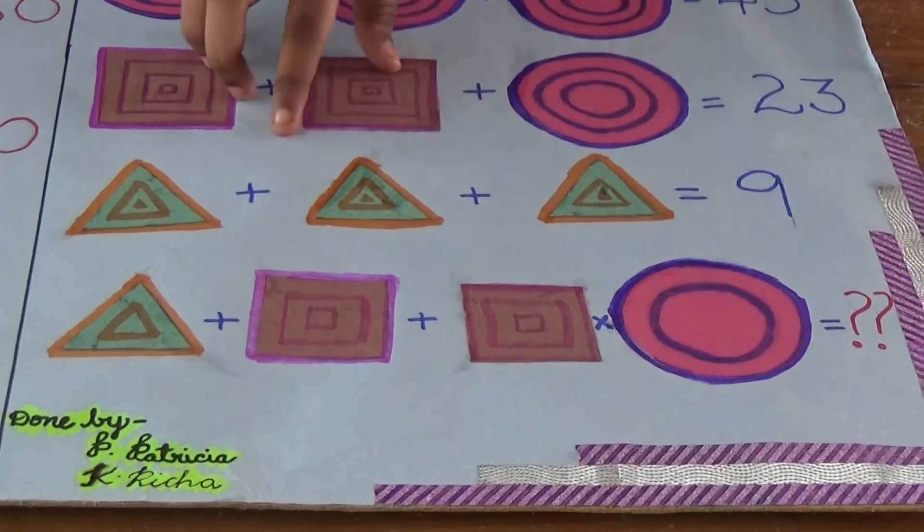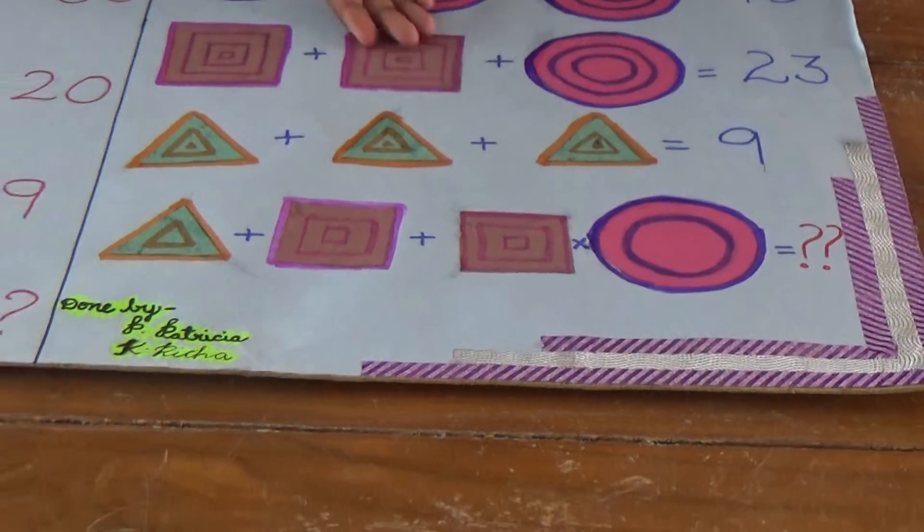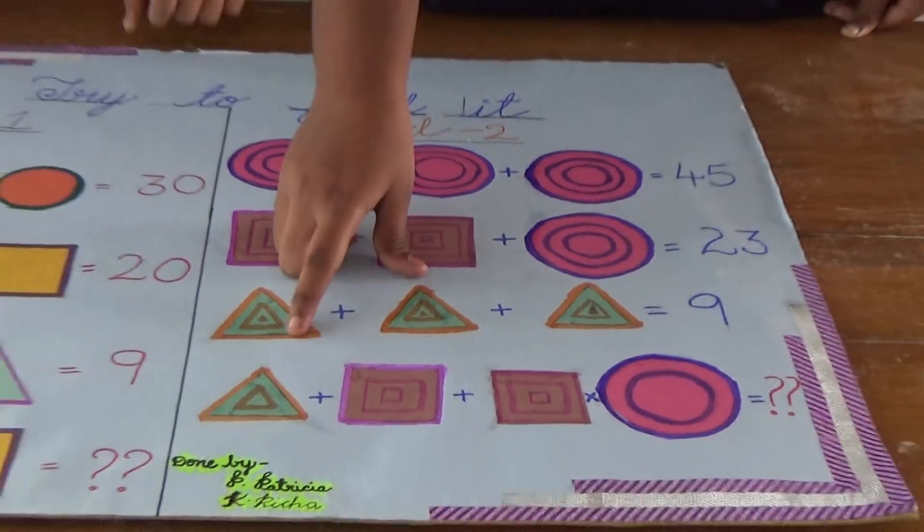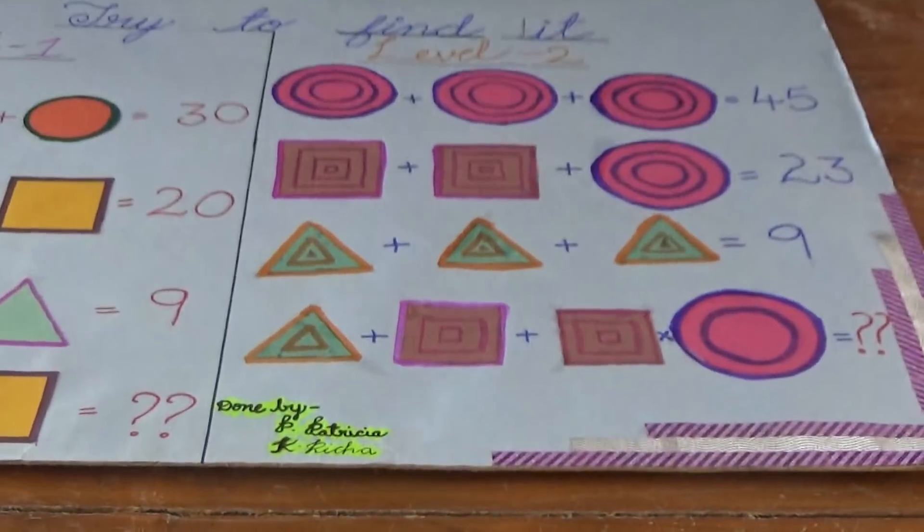The addition of these 3 triangles equals 9. By seeing all these shapes and knowing their values, you can find out the total sum of the last equation.